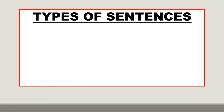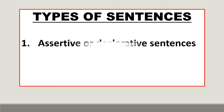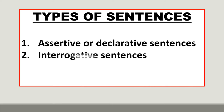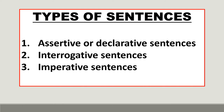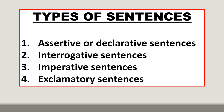Hello children. In this session we are going to learn about types of sentences. We will see that there are four types of sentences: assertive or declarative sentences, interrogative sentences, imperative sentences, and exclamatory sentences.